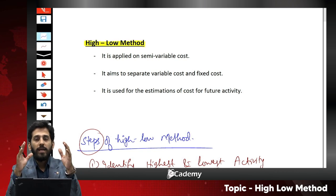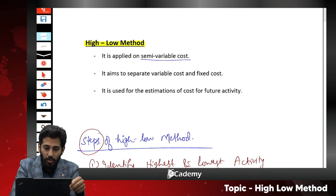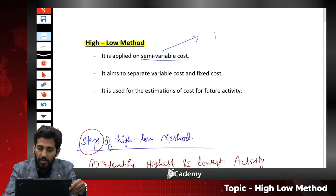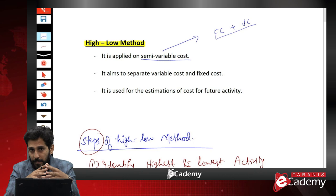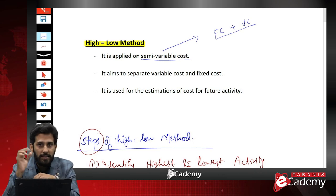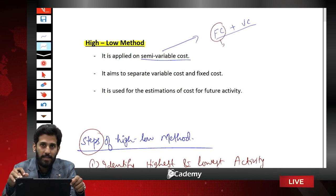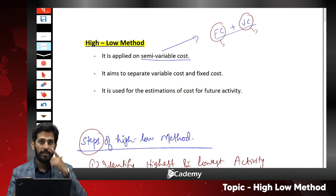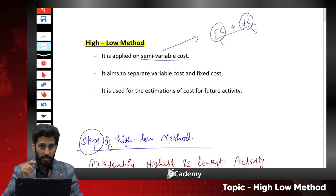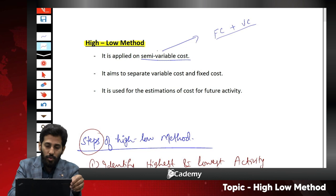Remember that there is a cost known as variable cost, there is fixed cost, and there is semi-variable cost. Semi-variable cost is fixed cost plus variable cost. For example, if you have appointed an employee — a salesman — you are paying a fixed salary, and in addition you are also paying commission. That total is known as semi-variable cost: the sum of fixed cost plus variable cost.